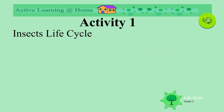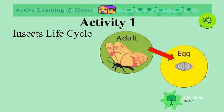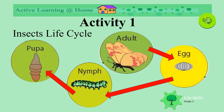Insects life cycle: there is an adult, and the adults lay eggs. These eggs hatch and out comes a nymph, which can look very different from the adults — often like worms and caterpillars. These spin a cocoon or make a pupa. Inside the pupa there is a change, and the adult emerges.